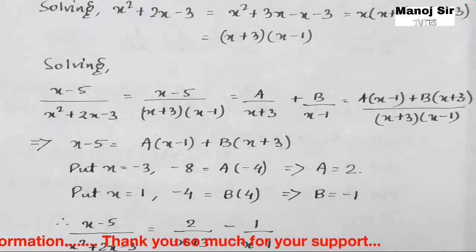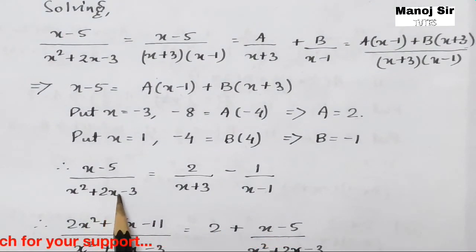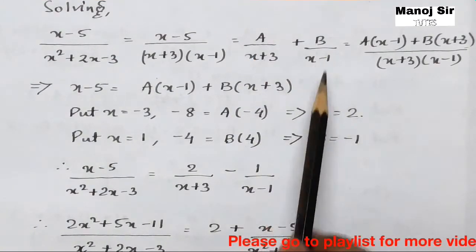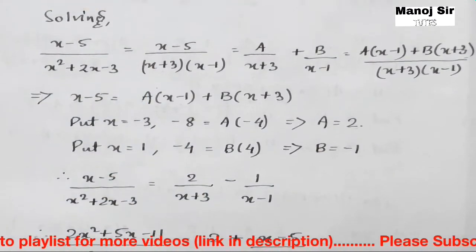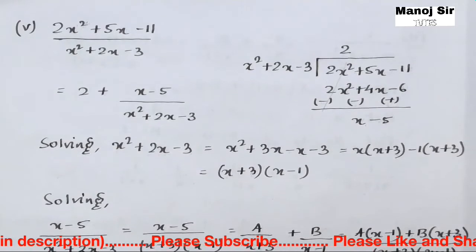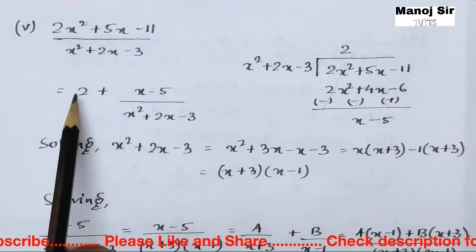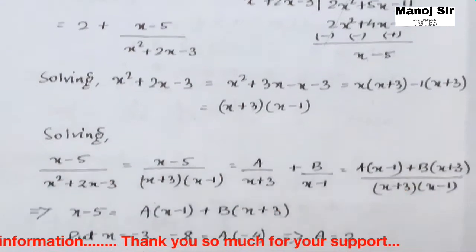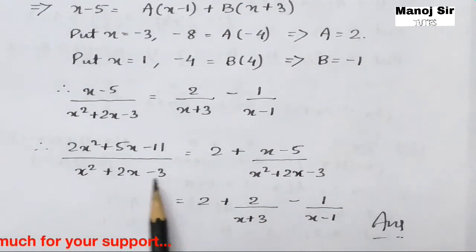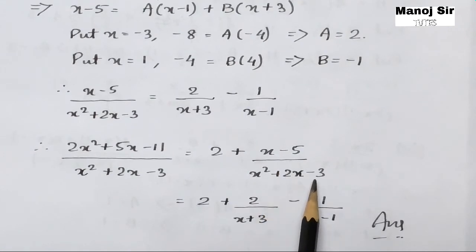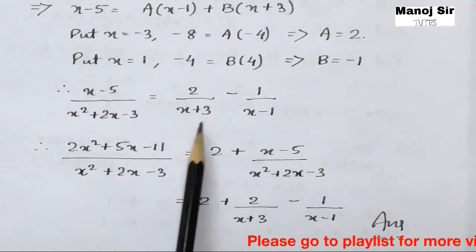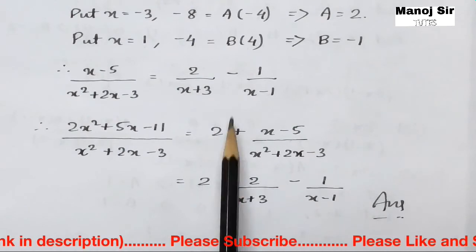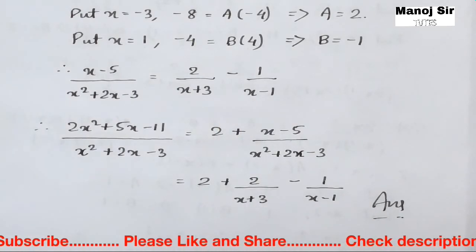So A = 2 and B = −1. This gives (x−5)/(x²+2x−3) = 2/(x+3) − 1/(x−1). Combining with the quotient, the full original expression equals: 2 + 2/(x+3) − 1/(x−1). This is the final answer for Example 5.